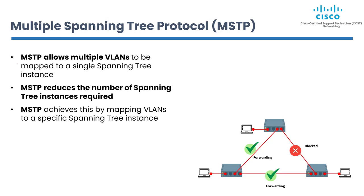Multiple Spanning Tree Protocol (MSTP) is an extension of RSTP that allows multiple VLANs to be mapped to a single spanning-tree instance, reducing the number of spanning-tree instances required and simplifying network management. MSTP enables administrators to configure multiple spanning-tree instances on a single network, with each instance supporting a different VLAN. MSTP achieves this by mapping VLANs to specific spanning-tree instances rather than creating a separate instance for each VLAN, reducing overhead and improving network performance.